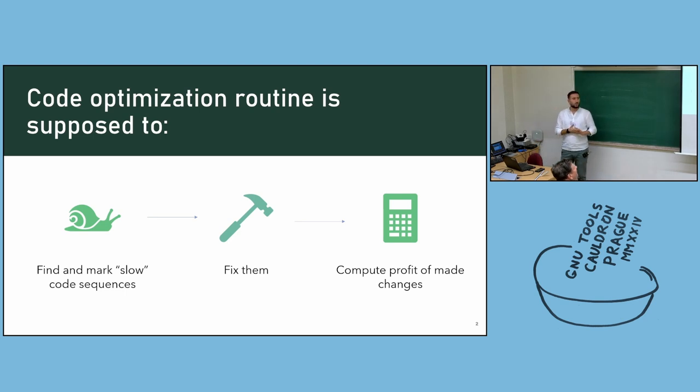As you know, code optimization routine is supposed to be split into three sequential steps. In order to enhance code generation, first we need to find slow code sequences, then fix them, and after fixing, compute profit of the main changes. Of course, the three steps are cyclic, and we almost always need to do these three steps.